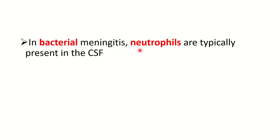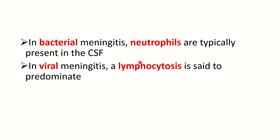In bacterial meningitis, neutrophils are typically present in the CSF in cases of acute bacterial meningitis. Except in viral cases, the cell typically present in the CSF is the neutrophil — not only in the CSF but also in all other body fluids including blood, when there is bacterial infection, neutrophil count is raised.